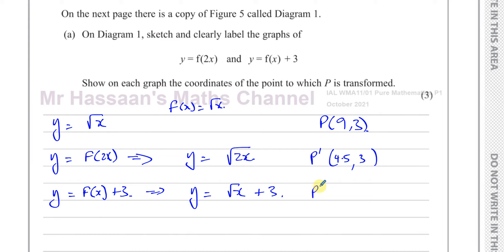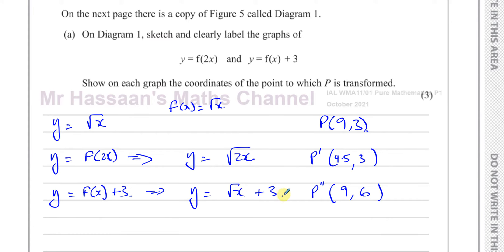For the second graph, y equals f(x) + 3, we have added 3 to the whole function. The x coordinates remain unchanged, so x stays as 9. This is a vertical translation of 3 units upward, so the y coordinate increases by 3: 3 + 3 = 6. The new coordinates of P for y = √x + 3 are (9, 6).